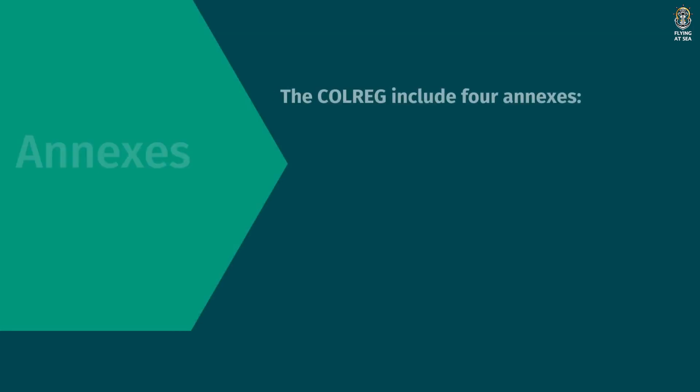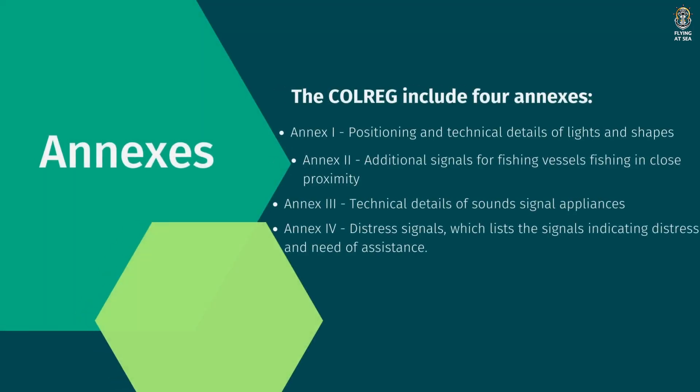Annexes. The COLREGS include four annexes. Annex I, Positioning and Technical Details of Lights and Shapes. Annex II, Additional Signals for Fishing Vessels Fishing in Close Proximity. Annex III, Technical Details of Sound Signal Appliances. Annex IV, Distress Signals, which lists the signals indicating distress and need of assistance.